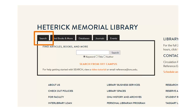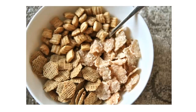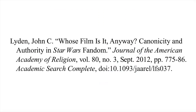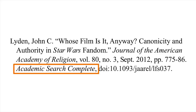When you use the search tab of the library homepage, you're searching multiple databases at the same time. Using the search tab is like pouring a bunch of different kinds of cereals into one bowl and eating them all together. Most citation styles require you to include the name of the database in which you found an article, so it's important to know the exact database in which you found an article so you can cite it properly.